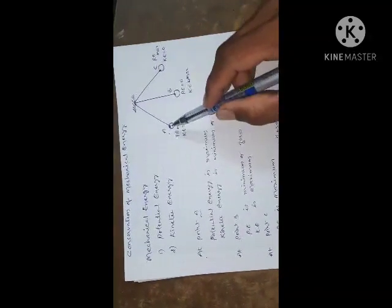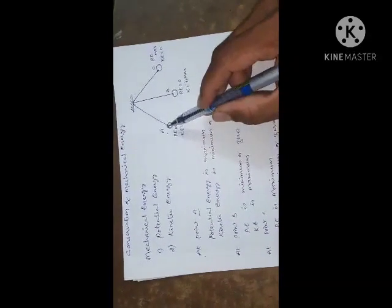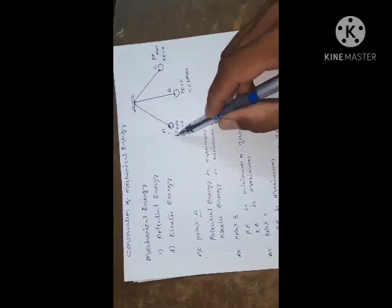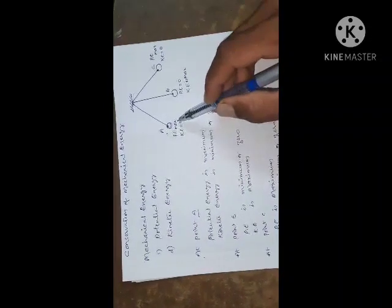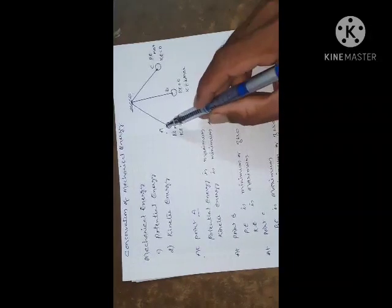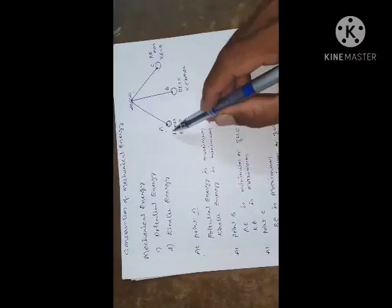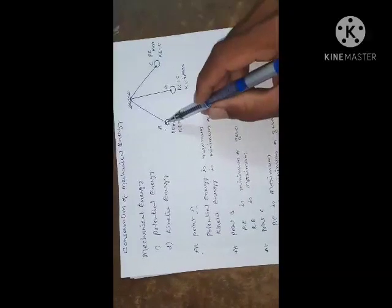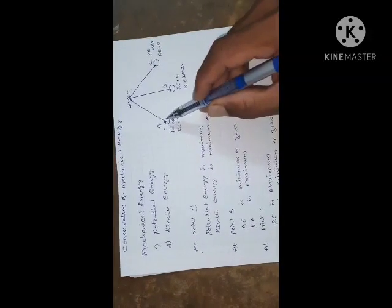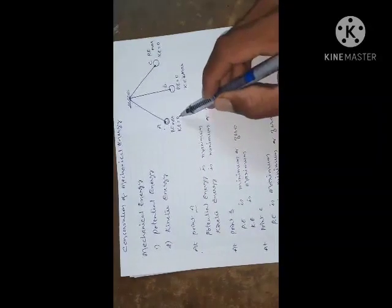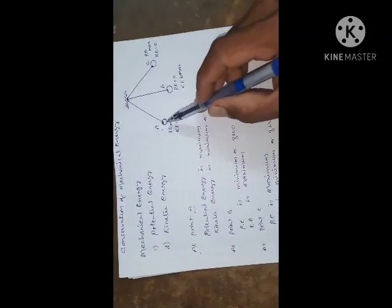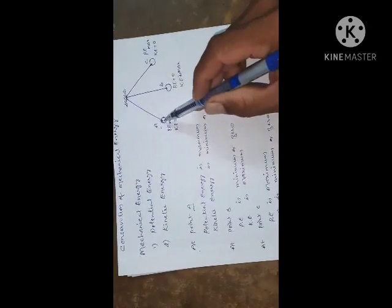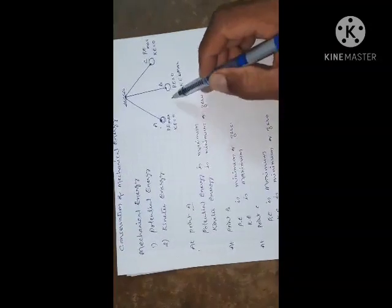At point A, the energy is in the form of potential energy. Here, at point A, potential energy is maximum. The velocity of the body is zero, therefore kinetic energy is zero. By using this maximum potential energy, the body moves towards B.